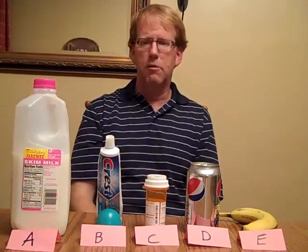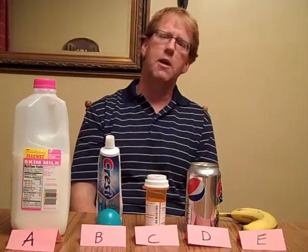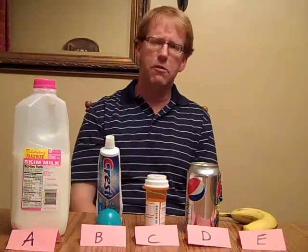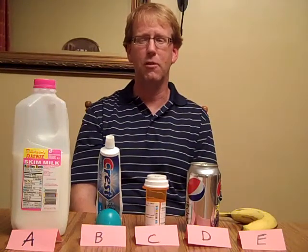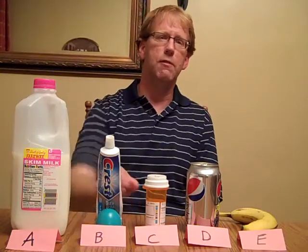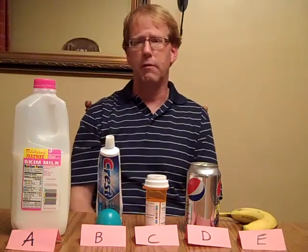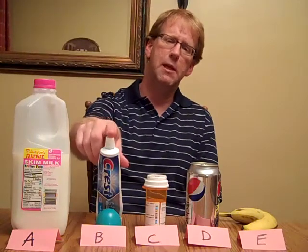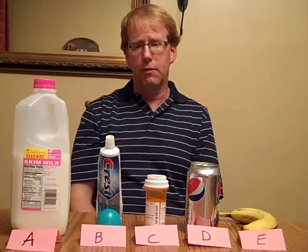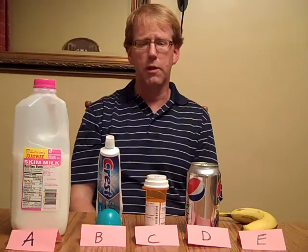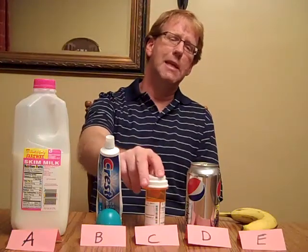Product B was the toothpaste. Toothpaste is kind of a necessity — it keeps our teeth clean and our breath smelling fresh. If the price does go up on toothpaste, we're probably still going to use it. Maybe if it goes up a lot we'd try to find something else like baking soda, but for most of us, even if it's gone up 20 or 30 cents or maybe a dollar, if we need toothpaste we're going to buy it. So toothpaste would be inelastic. Product C was the medicine. If it's a medicine you really need — necessary for your quality of life — you're probably going to go ahead and buy it no matter what the price is. So this is another example of an inelastic product.